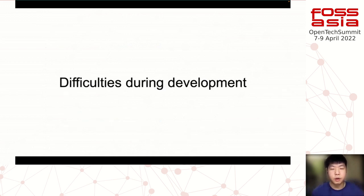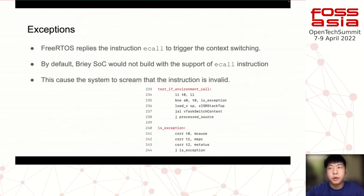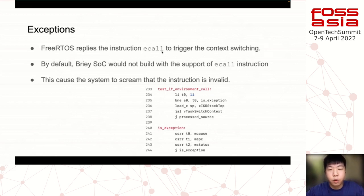Now let's talk about some difficulties encountered during development. The first issue is exceptions. Exceptions are how the hardware protects the operating system from doing the wrong thing. Classical exceptions include page faults and illegal instructions. In this case, FreeRTOS relies on the ECALL instruction — environment call — to trigger context switching.